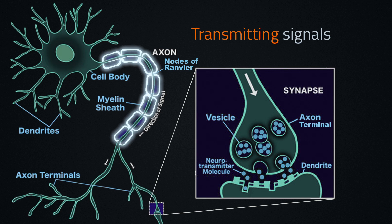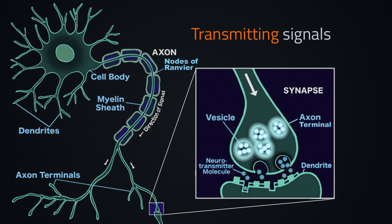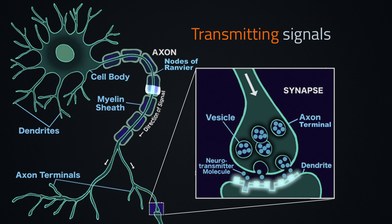At the end of the axon, the signal reaches the axon terminal. This terminal contains vesicles filled with neurotransmitters. When the signal reaches them, they merge with the cell membrane and release neurotransmitters into the synaptic cleft. Neurotransmitters pass through the synaptic cleft and bind to receptors located on the dendrite of the postsynaptic cell.